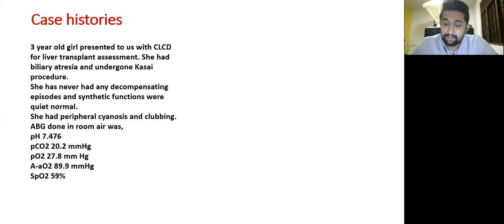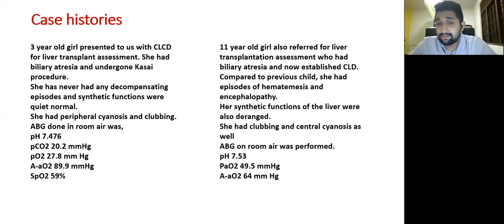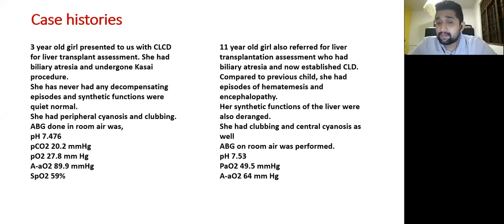The second case is an 11-year-old girl with biliary atresia who also underwent a successful Kasai procedure and was referred for transplantation assessment with established chronic liver disease. Unlike the first child, she had episodes of decompensation including hematemesis and encephalopathy. Her synthetic functions were deranged — albumin was low and INR was prolonged. She had clubbing with central cyanosis. ABG on room air showed pH 7.53, partial pressure of oxygen 49, and alveolar-arterial oxygen gradient of 64.